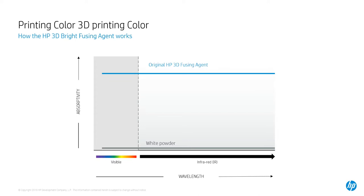We went back to the drawing board in R&D and said: we need you to develop a fusing agent which will absorb energy in the infrared spectrum so that we can fuse the parts, but we don't want it to absorb energy in the visible light spectrum so that we can apply color. It took a lot of work, but we were able to come up with what we call a bright fusing agent. It will prevent the visible light spectrum from being absorbed so that we have that white powder background, and then we can apply color on top of that.